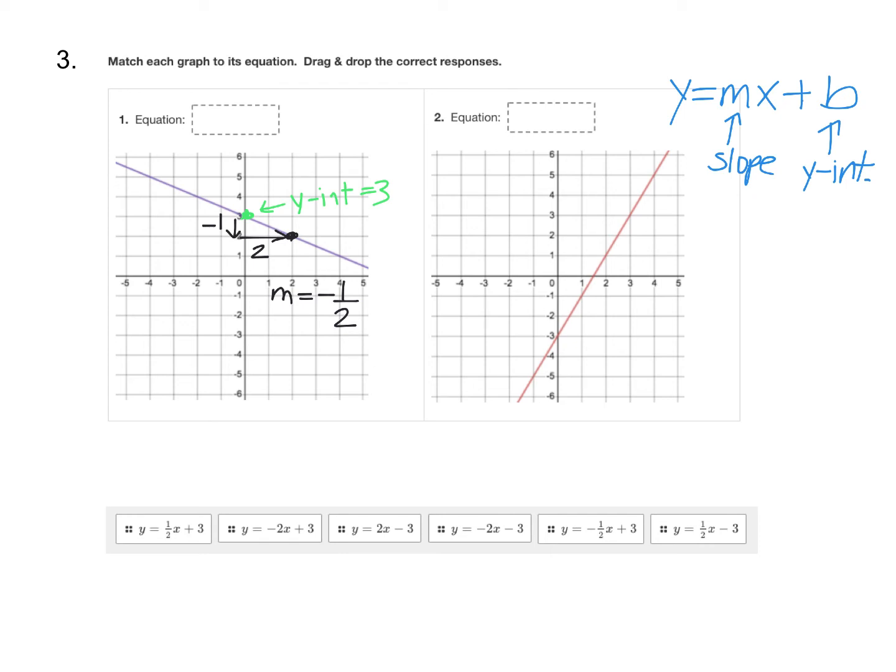Our y-intercept, which is our b there, is a three. So our equation must be y equals negative one-half x plus three. And you'll find that from down here, and you'll drag and drop it up into the number one box.